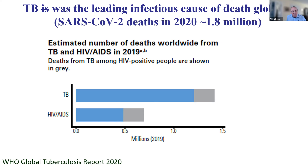TB is causing over a third of deaths in people with HIV. Even if you remove from this graph the deaths from people with HIV due to TB — shown as the shaded gray area — you still see that TB far outweighs HIV now in terms of global mortality.